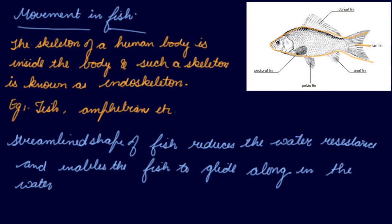If you have ever seen a fish moving, yes, it moves in a zigzag pattern — it moves the body from side to side as the tail fin moves along with the body in a zigzag pattern. This is due to the muscles moving inside the fish body, so these tail muscles and its streamlined shape help the fish to move in the water.